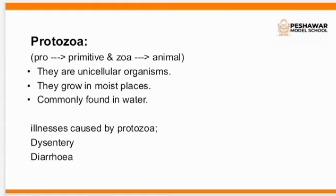The next one is protozoa, on page 14. 'Proto' means primitive, referring to the early stage of development, and 'zoo' means animals — so they are like early-stage animals. Protozoa are unicellular organisms. They grow in moist places — meaning wet, not dry — and are commonly found in water, such as at the corner of water lines or sewerage systems. Illnesses caused by protozoa are dysentery and diarrhea, which you are very well familiar with.